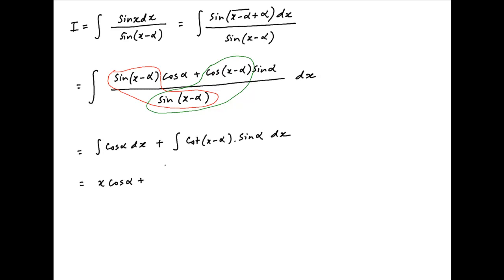The first term is equal to x times cos alpha and the second term is equal to sine alpha times ln of sine of x minus alpha plus the constant of integration.